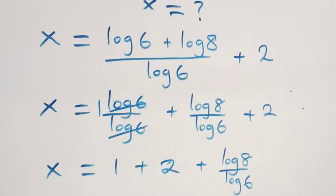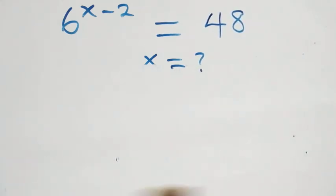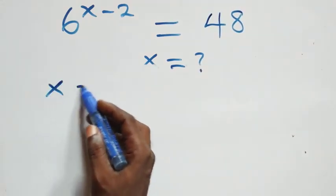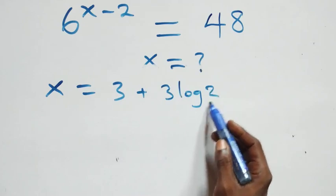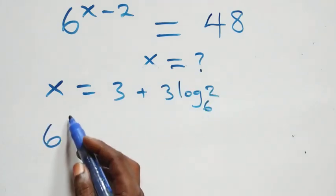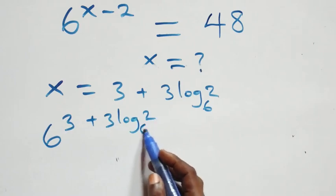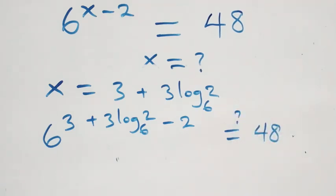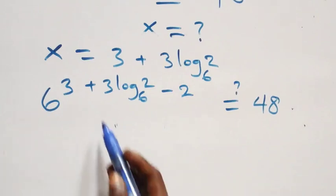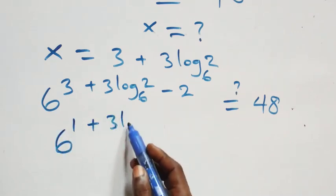To verify this satisfies the given problem, we substitute x equals three plus three log base six of two back in. We get six raised to power three plus three log base six of two, minus two, equals forty-eight. Bringing three minus two together gives one, so we have six raised to power one plus three log base six of two equals forty-eight.